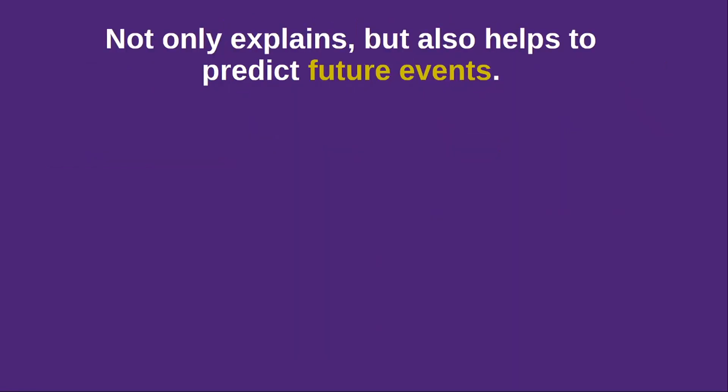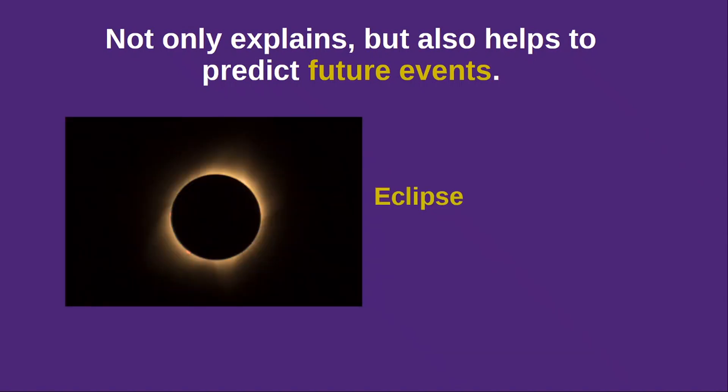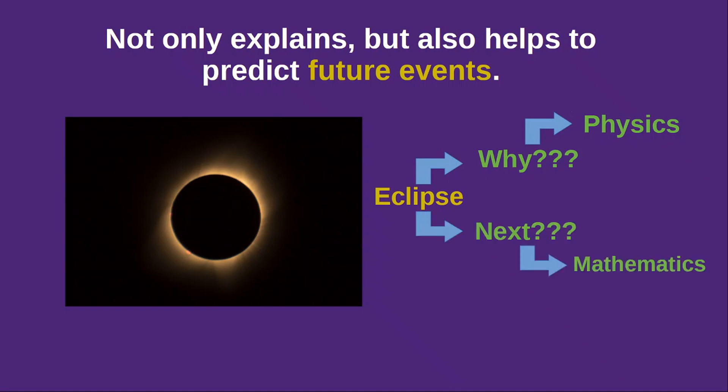Well, physics not only explains but also helps to predict future events. For example, an eclipse, why does an eclipse occur, can be explained with physics. Including some mathematical tools, we can also predict when it is going to occur next.